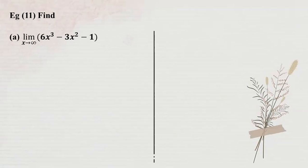The approach at infinity uses 1 by x power n. This is the method we repeat to find limits at infinity.